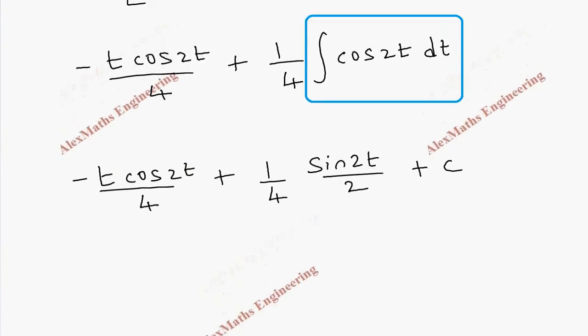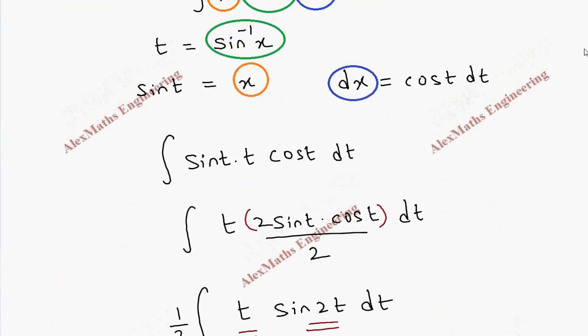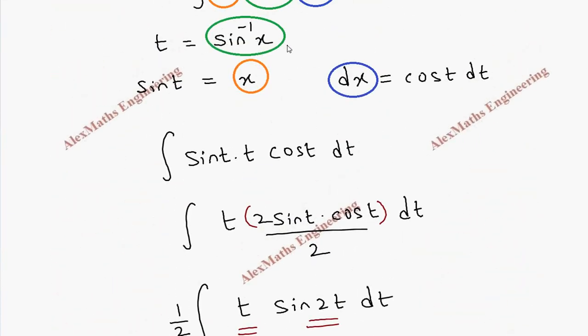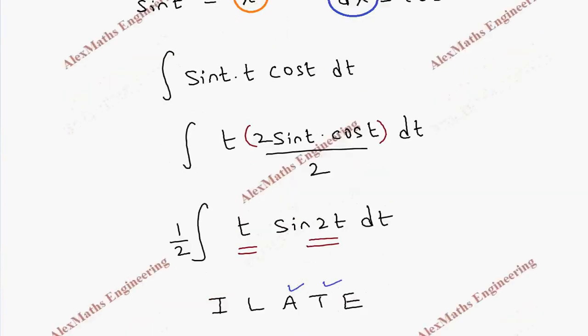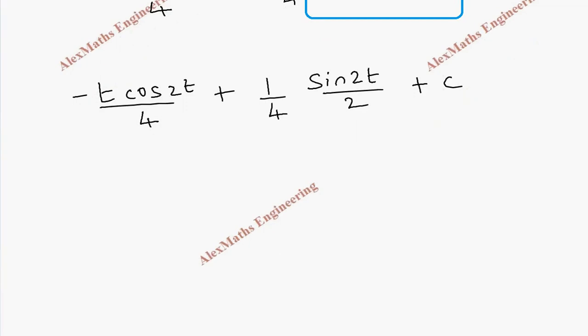Now we have to replace t, but our t is sine inverse x and x is sine t. Let's write that here. Our substitution is t equals sine inverse x, so if I carry this to the other side, sine t is x.